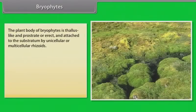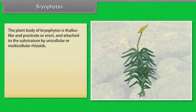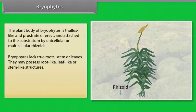The plant body of bryophytes is thallus-like and prostrate or erect and attached to the substratum by unicellular or multicellular rhizoids. Bryophytes lack true roots, stem, or leaves. They may possess root-like, leaf-like, or stem-like structures.